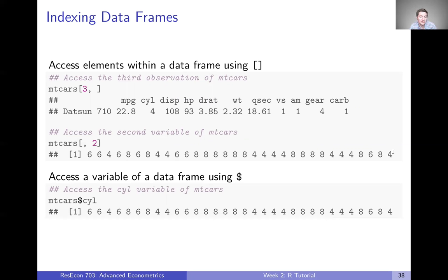Another way we can access variables in a data frame is using the dollar sign. So mtcars bracket comma two is exactly equivalent to typing in mtcars dollar sign and then the name of that second variable, cyl, where you can pull out that second variable either way. So if you were wanting to manipulate a given variable or something, you could call it either way.